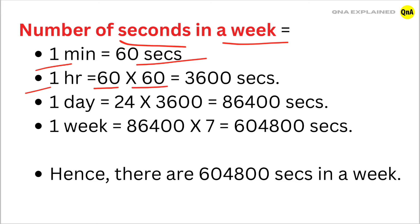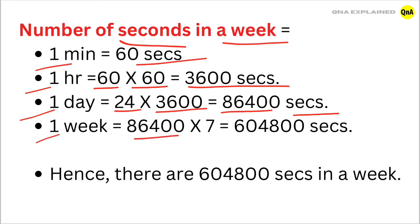That means 1 hour equals 3,600 seconds. 1 day equals 24 into 3,600, which means 86,400 seconds. 1 week equals 86,400 into 7, which means 604,800 seconds. Hence, there are 604,800 seconds in a week.